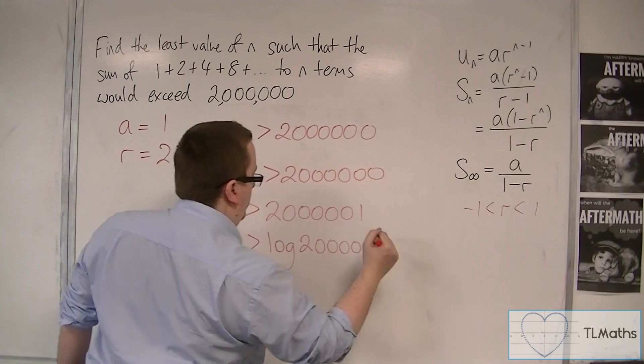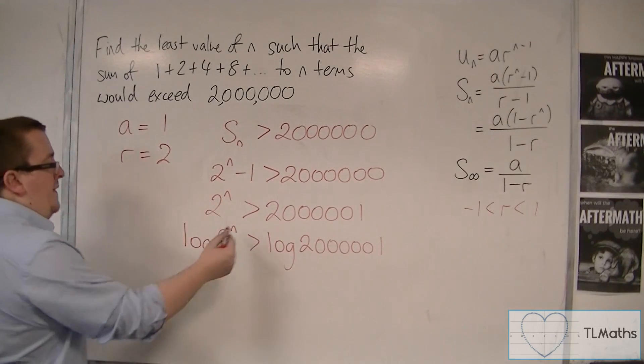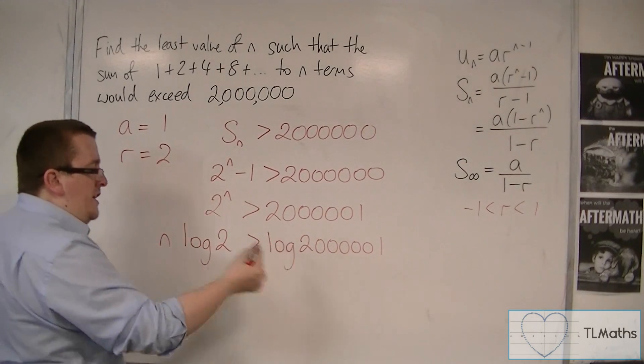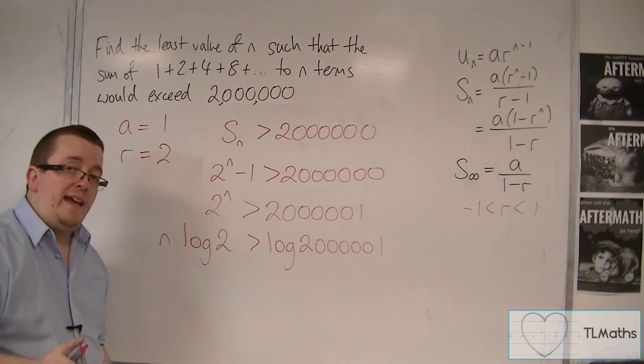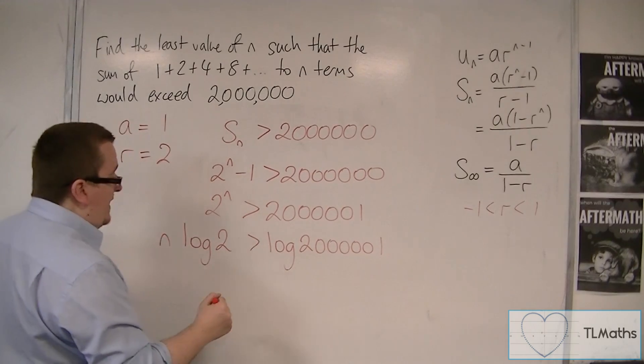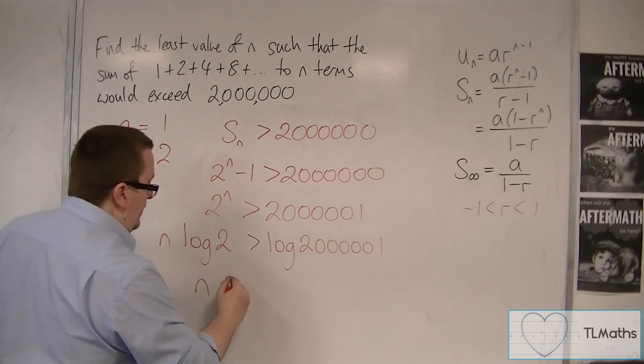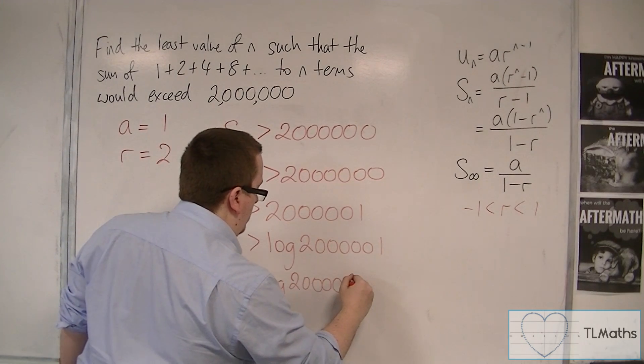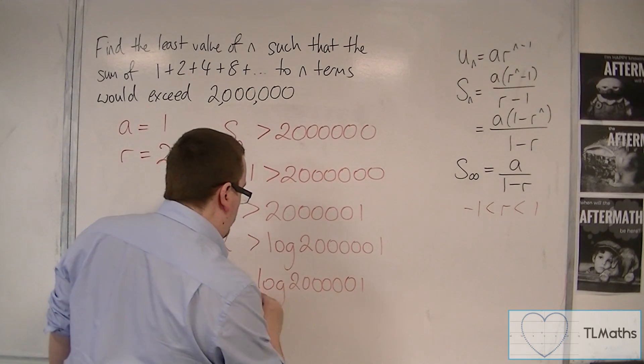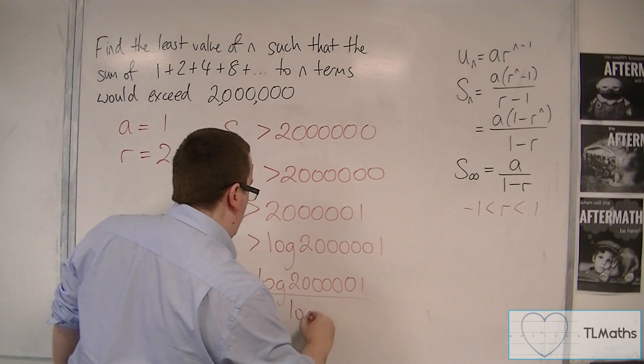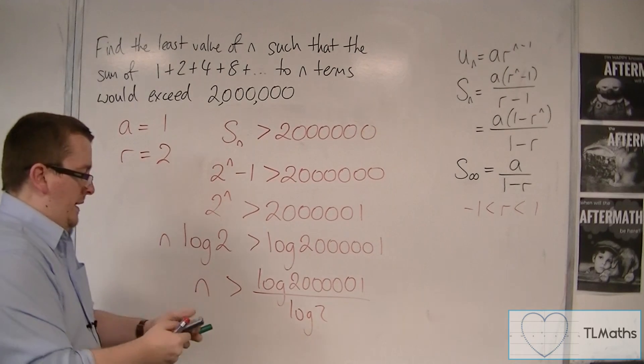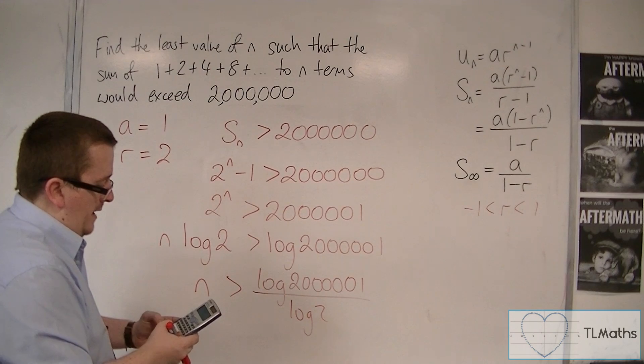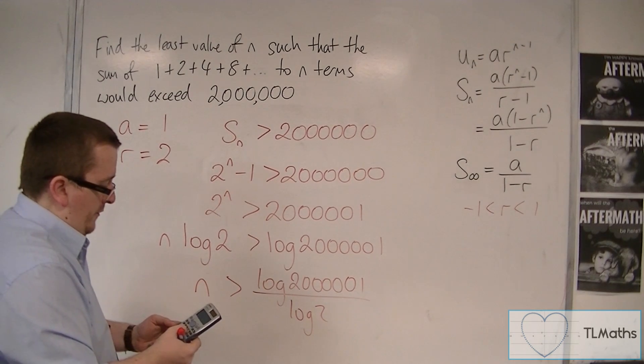1, 2, 3, 5 and the 1, then the n can come down to the front using the log law, and then you can divide both sides by log 2. You've got to be careful to make sure that log 2 isn't negative. It isn't in this case, so that's fine. So log of 2 million and 1, that's the correct number of zeros, divided by log 2. And so log of 2 million and 1 divided by log of 2 is equal to 20.9.